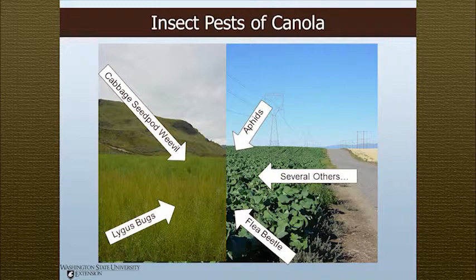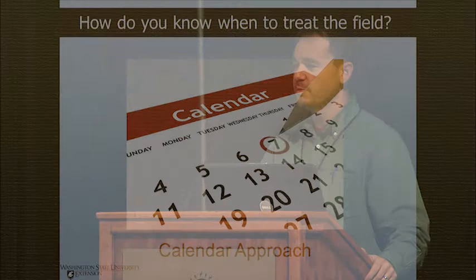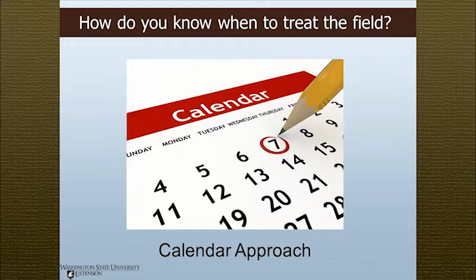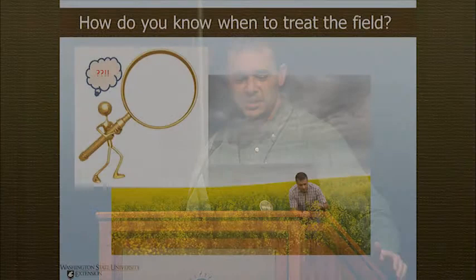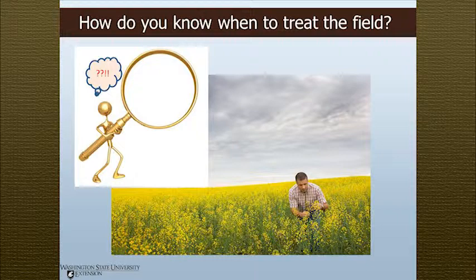So how do we know if you have pests in your field? Do you use the calendar approach — 'I sprayed on the 7th last year,' or 'my neighbor did,' or 'I remember my granddad saying he sprayed for an insect pest one time'? That's not good insect pest management. Hopefully you and your crop advisor are out in the field actually looking for insect pests and the beneficials, because this will help you make proper pest management decisions.